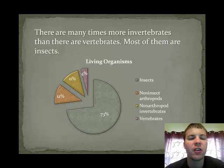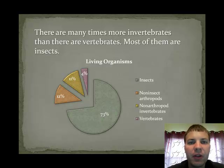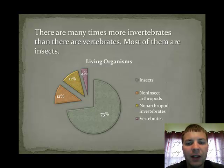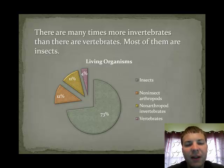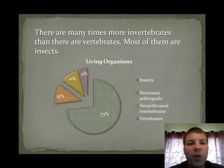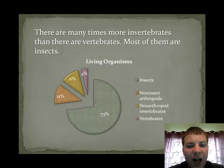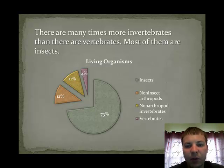Here you see a pie chart of all the animals that have been discovered so far. The largest group are arthropods, including the insects. 73% of all animals are insects — we're very much outnumbered. 12% of all animals are non-insect arthropods. 11% of animals are non-arthropod invertebrates, which would include the sponges, cnidarians, flatworms, roundworms, etc.